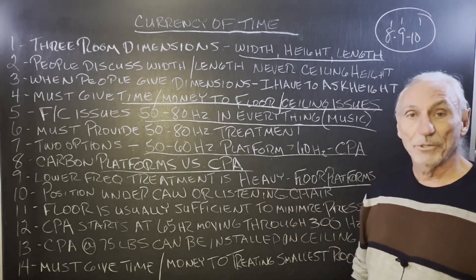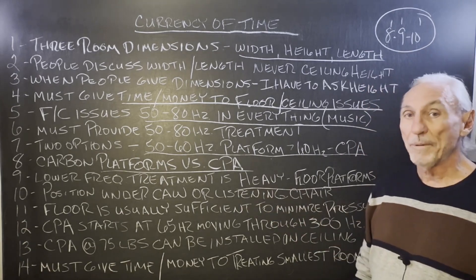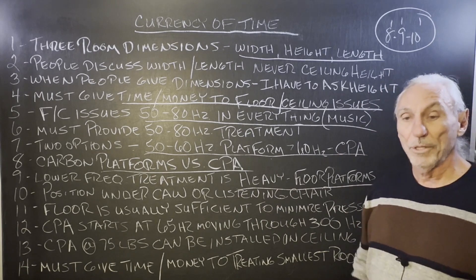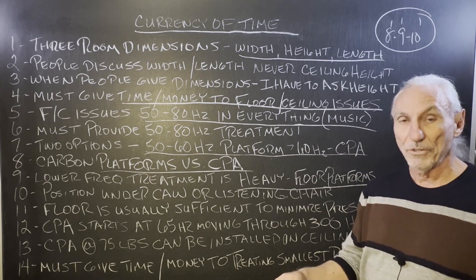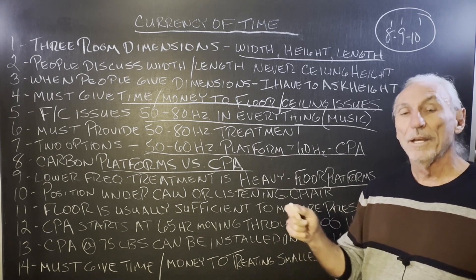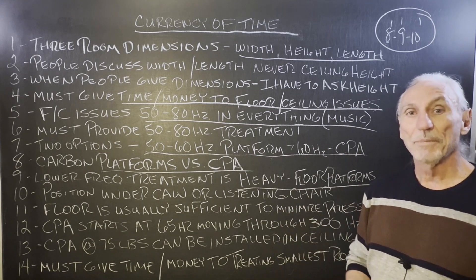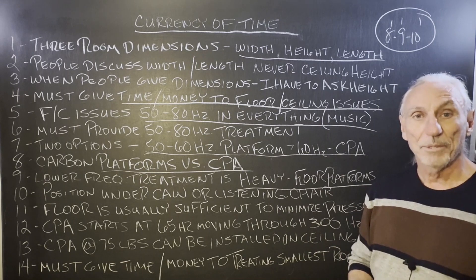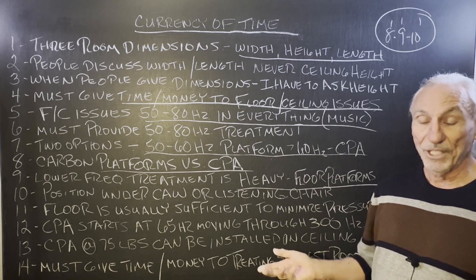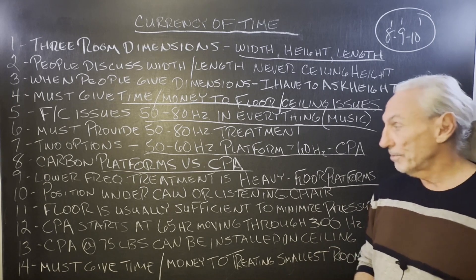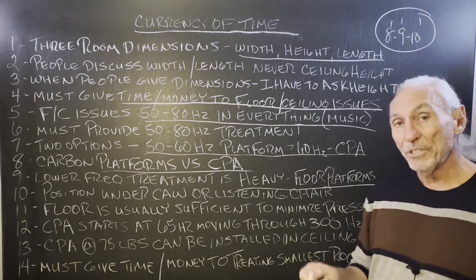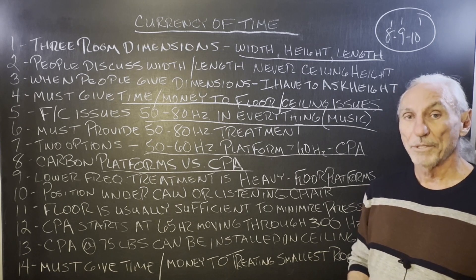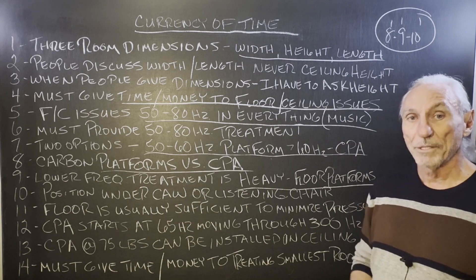The floor platform is very heavy — modules are about 150 pounds each and you need about eight of them. They fit together to form a floor; you set your station and chair on it. The best place to put low-frequency management technology is as close to the listening position as you can get. Sitting on it, you can't get much closer. Especially in theaters, we build it into the risers because that's a great place to put it and we've got space to work.